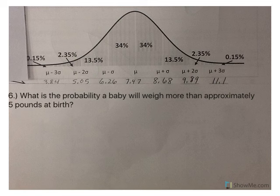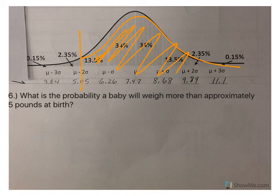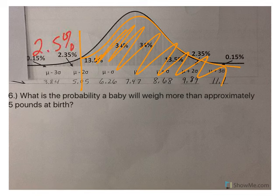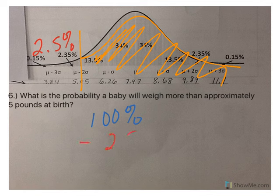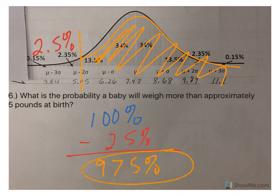Number six: what's the probability a baby will weigh more than 5 pounds? Here's 5 pounds. More is everything to the right. You could add all of that together, but we already know from our previous problem that this over here is 2.5%, and we know the whole thing is 100%. So if we take all of it, 100%, take away the 2.5% that we know is on the left, that will leave us with 97.5% on the right.